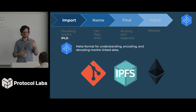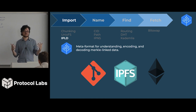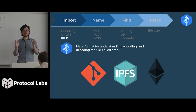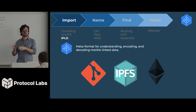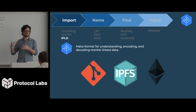IPLD is a meta format for understanding and encoding Merkle-linked data structures. We use it in IPFS, but we can also use IPLD to understand data in Git and Ethereum, because those are also Merkle-linked data structures. Basically, IPLD is a system for typing, or adding a bit of metadata to Merkle-linked data structures — type them as a Git DAG, an IPFS DAG, or an Ethereum DAG. As you use IPLD to walk these data structures, you remember the context you're in so you know how to find the next piece.